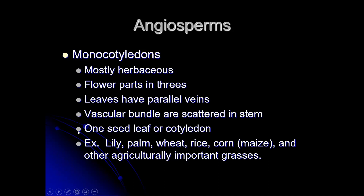So your four distinguishing characteristics, plus the fifth one about root vascular bundles arranged in a circle or ring pattern in the root as opposed to scattered in the stem. And you get one little seed leaf coming out when you sprout the seed. Examples include lily, palm — palm trees are definitely not herbaceous stemmed — wheat, rice, corn, maize, and other agriculturally important grasses.